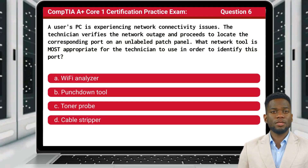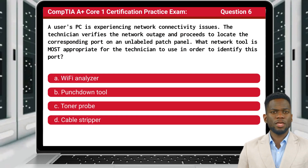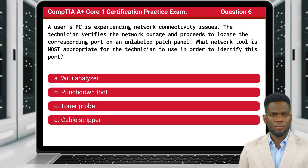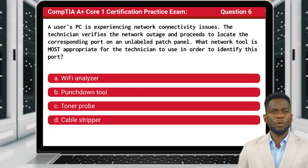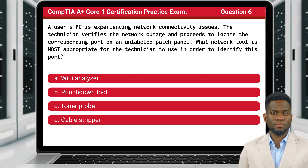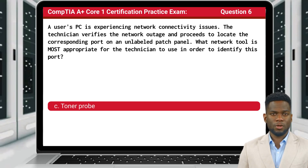Question 6. A user's PC is experiencing network connectivity issues. The technician verifies the network outage and proceeds to locate the corresponding port on an unlabeled patch panel. What network tool is most appropriate for the technician to use in order to identify this port? The answer is C, toner probe.